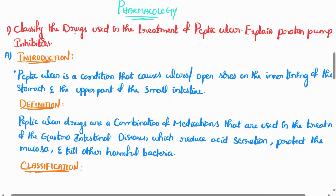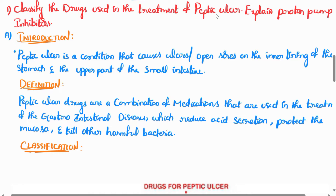First of all, we have to classify the drugs used in peptic ulcers — especially the proton pump inhibitors. We also need to explain the drugs. The introduction: peptic ulcer is a condition that causes ulcers or open sores on the inner lining of the stomach and the upper part of the small intestine. These ulcers are called peptic ulcers, and this is a gastrointestinal condition.